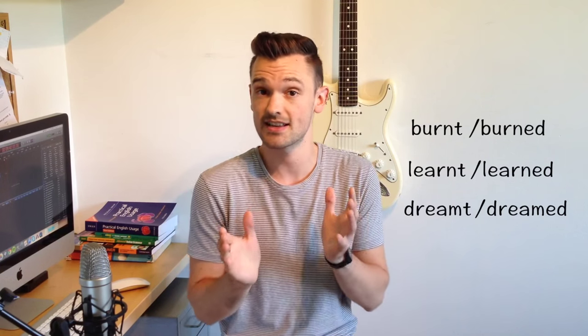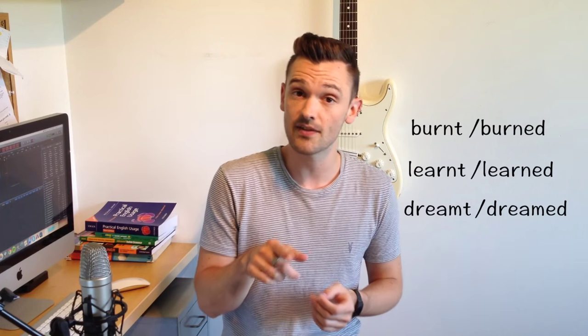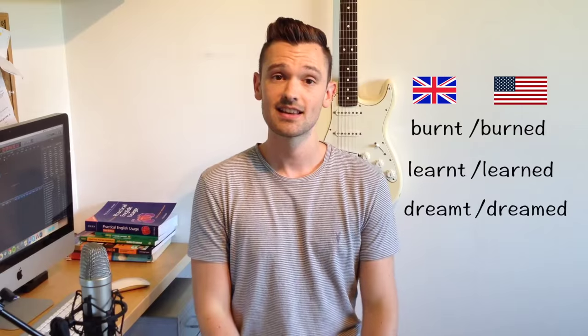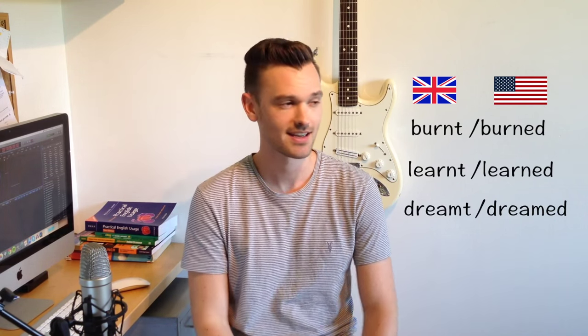One last thing: you might see words like 'burnt', 'learnt', and 'dreamt' as well as 'burned', 'learned', and 'dreamed'. Some verbs have alternative past tense forms — the one with the T on the end, like 'burnt', is more common in British English, and the one with ED on the end, like 'dreamed', is more common in American English. So an American might say 'I burned my finger', while a British person might say 'I burnt my finger'. You can't do this with every verb — there are just a few that do this.